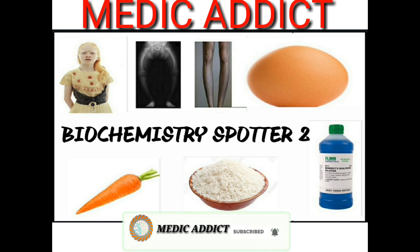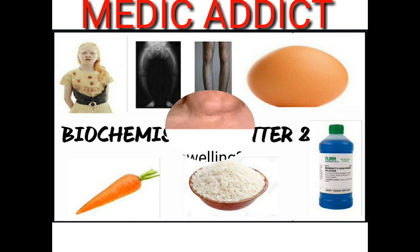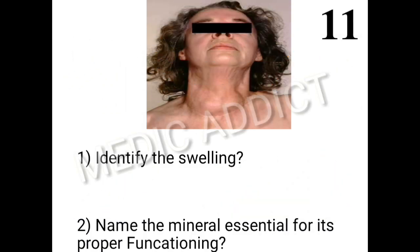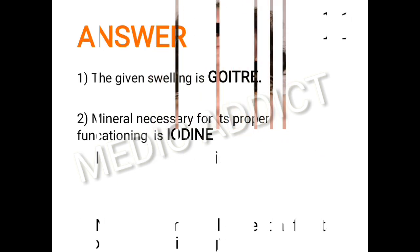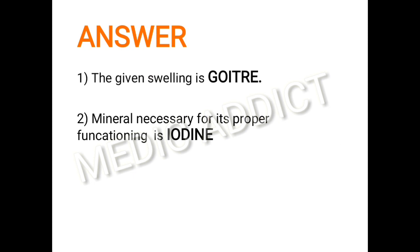Let's move to our spotters. We'll be moving to spot number 11. The question is to identify this swelling and name the mineral that is essential for its proper functioning. From the figure, we can see a bilobed swelling present on the neck region. I request everyone to pause the video, think of the answer, then resume and clarify. The given condition is called goiter and the mineral that is necessary for its proper functioning is iodine.